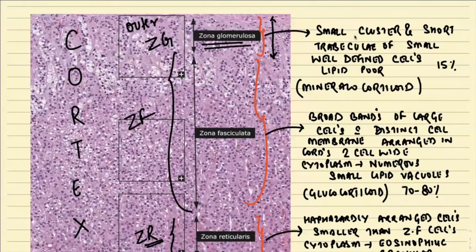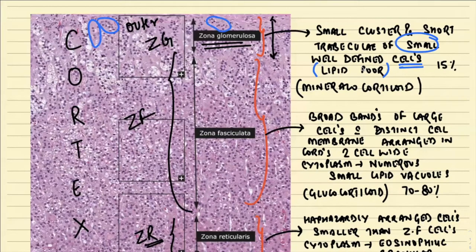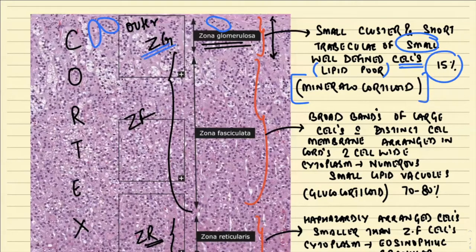The zona glomerulosa is mainly composed of small clusters and short trabeculae of small, well-defined, lipid-poor cells — so they are not whitish in color. These form the zona glomerulosa, which comprises only 15% of the adrenal cortex and is basically involved in the secretion of mineralocorticoids, most importantly aldosterone.